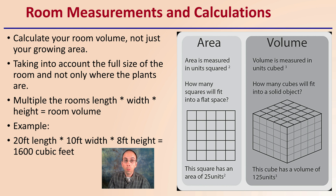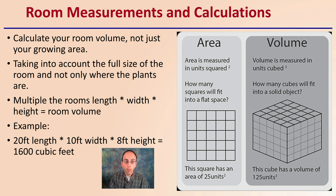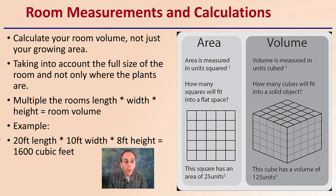Calculate your room volume, not just your growing area. You want to take into account the full size of the room and not only where the plants are. You don't want to simply look at the length and width — you also want to take into account the height to get the full volume. For example, if you had a room that was 20 feet long, 10 feet wide, and 8-foot ceilings, you would have 1,600 cubic feet of volume.